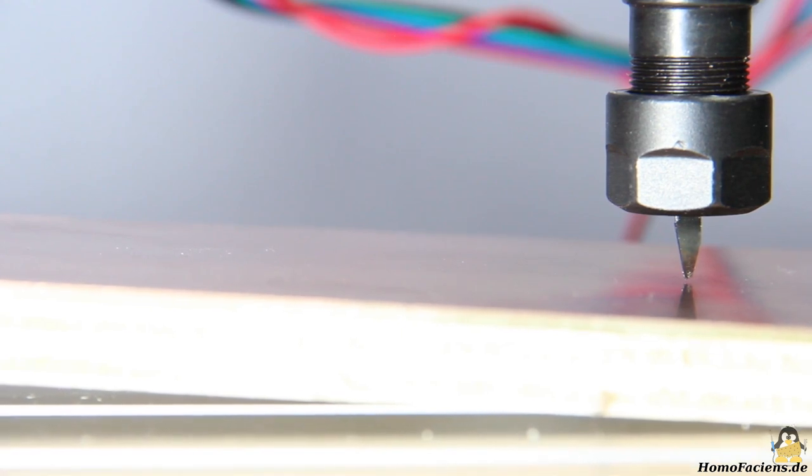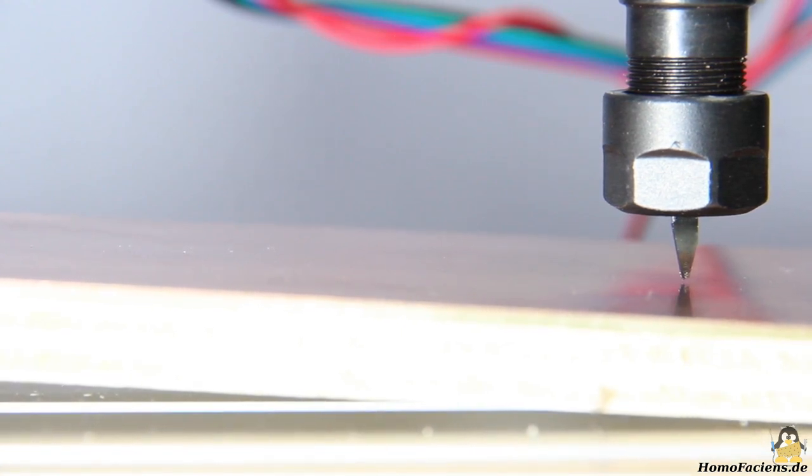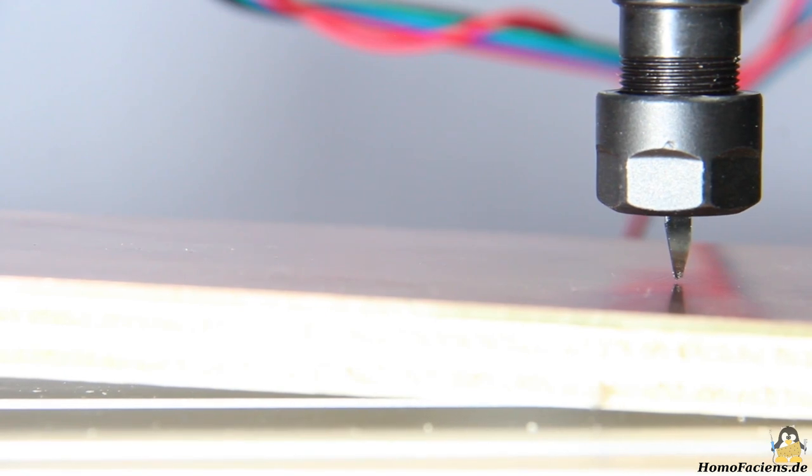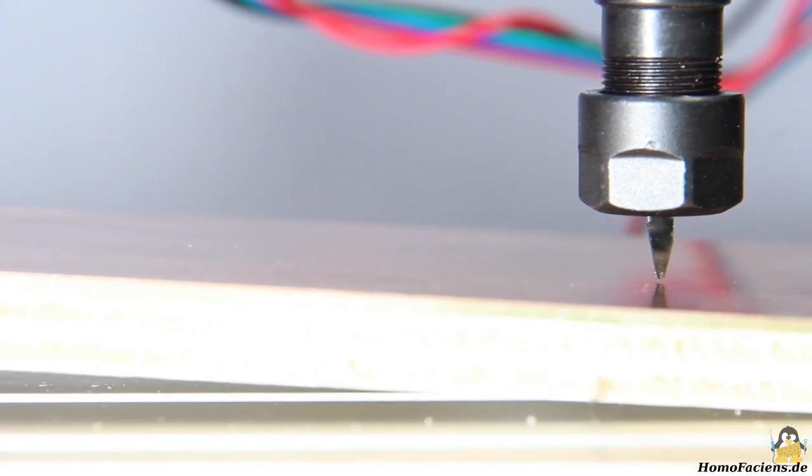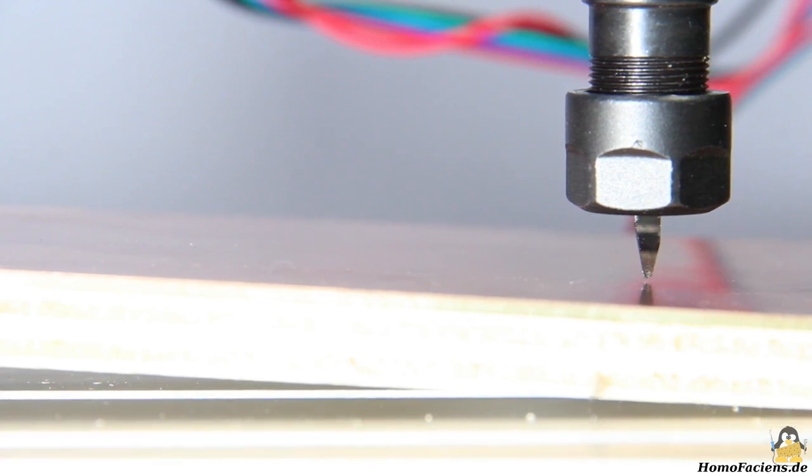Ideally the circuit board should be as flat as can be on the routing table which is usually done by special mounts, double sided tape and things like that, but the purpose of this test is to only use what is inside the package.